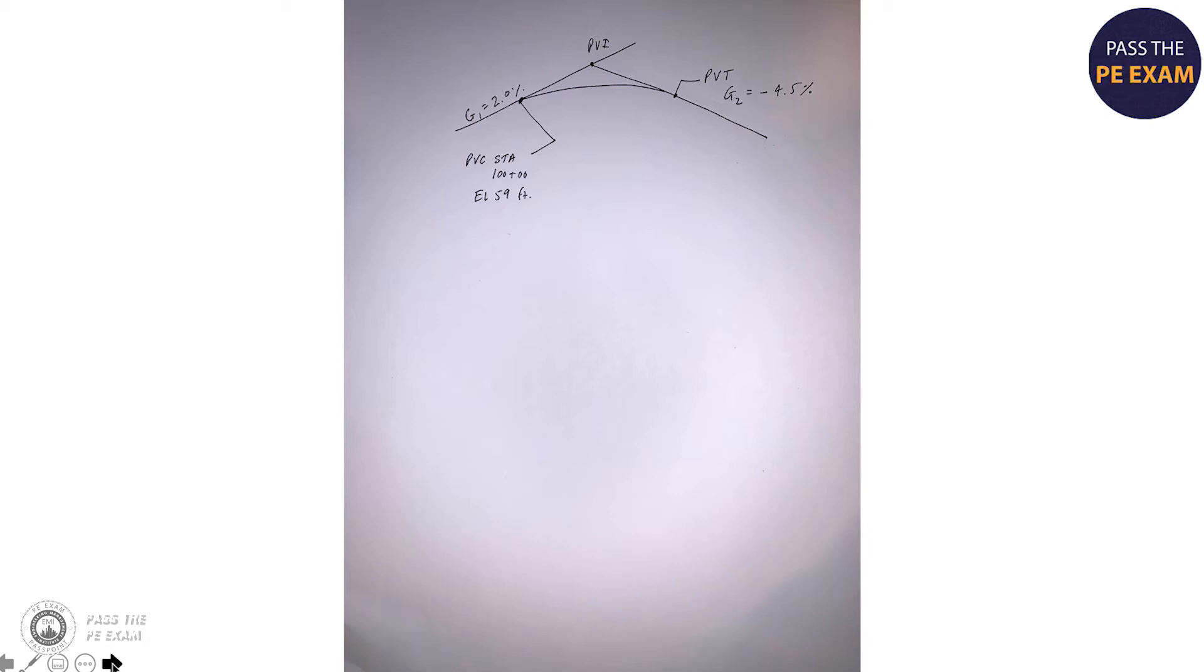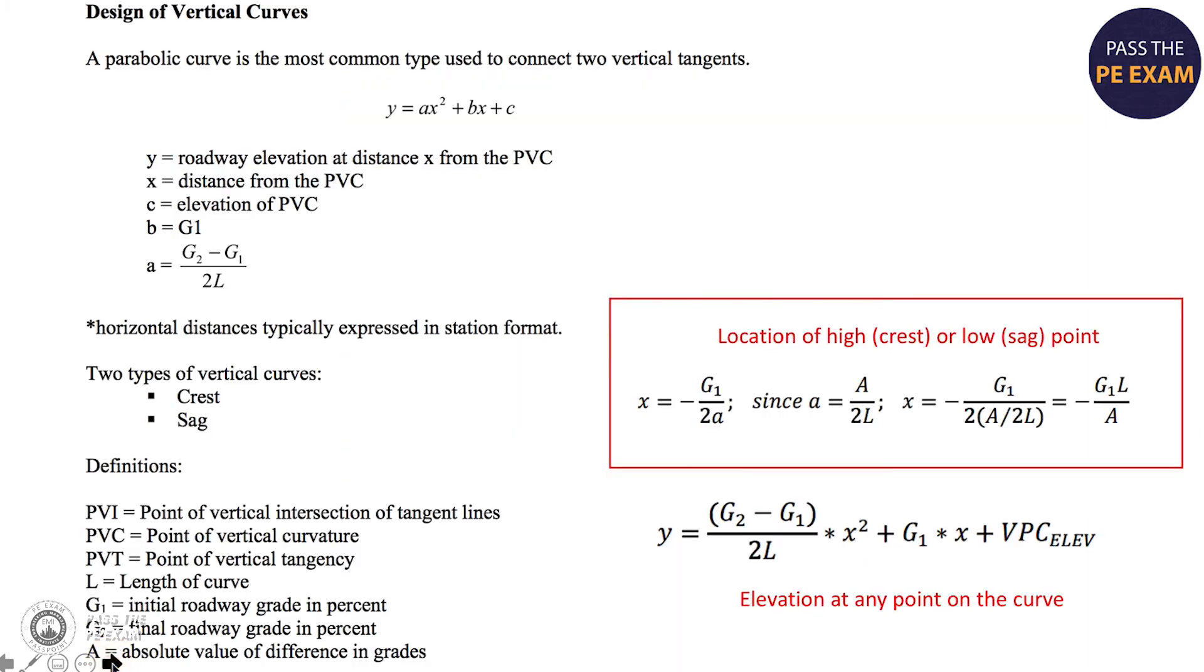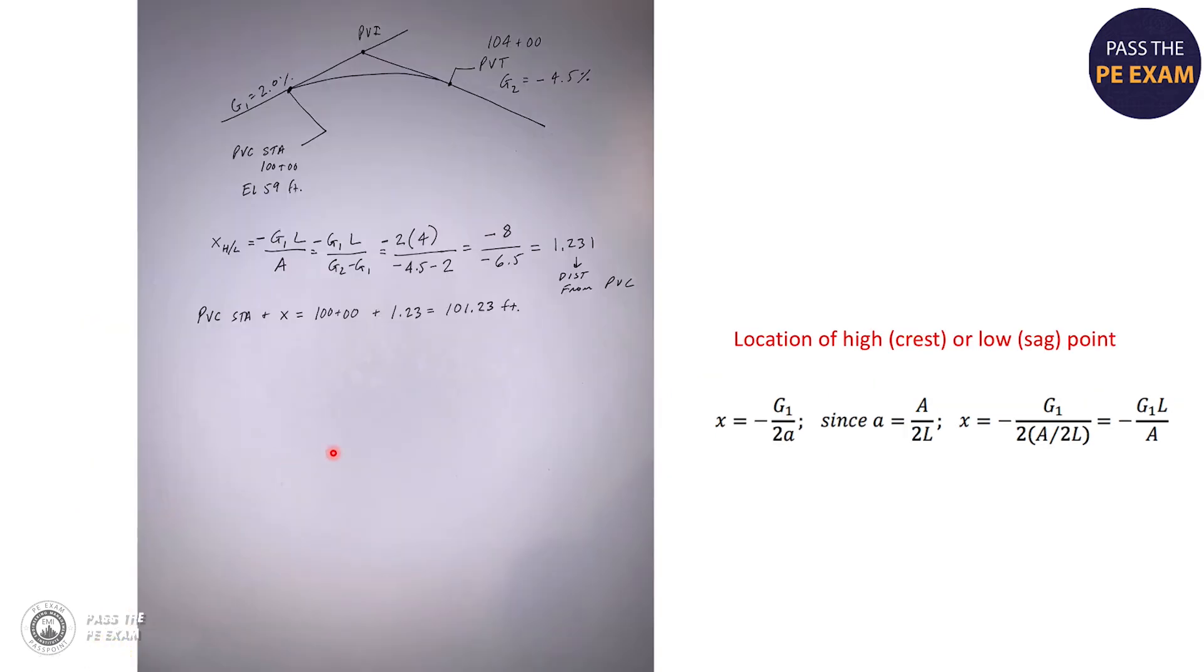So now we need to find again the location of that high point of the curve. Going back to the equations I just showed you, we're going to need this equation that you see here in the red box because that helps us to find the location of the crest. So you can see here that I've taken the equation and I've written it in here. Something that's important to note is what this equation ultimately boils down to is negative G1 or grade one times the length over A. And this capital A is simply G2 minus G1.